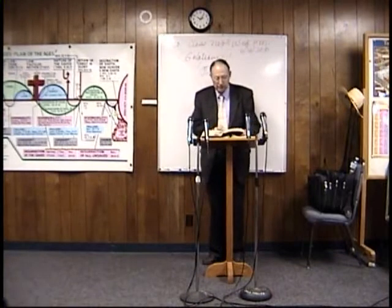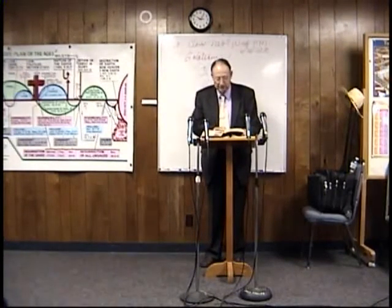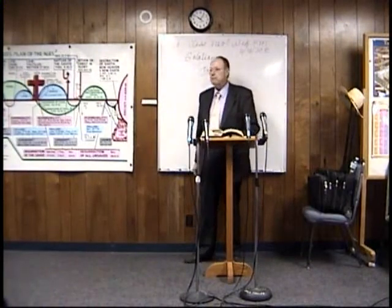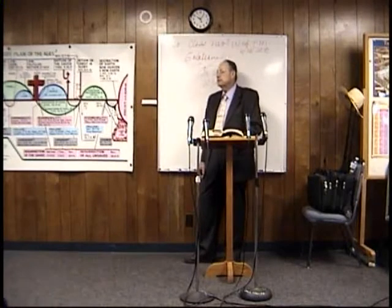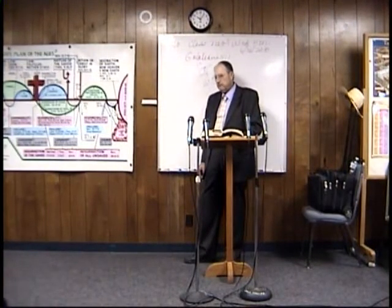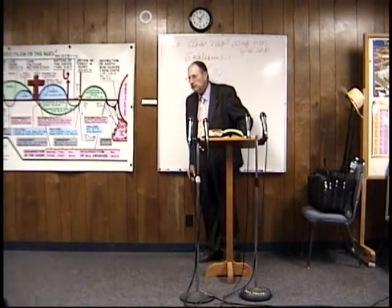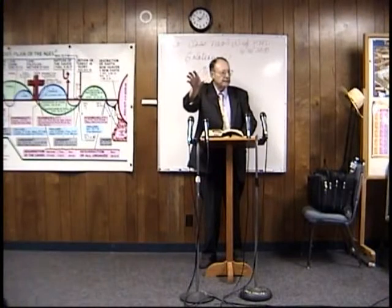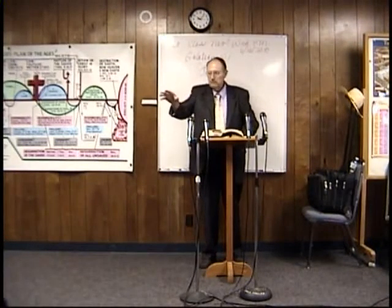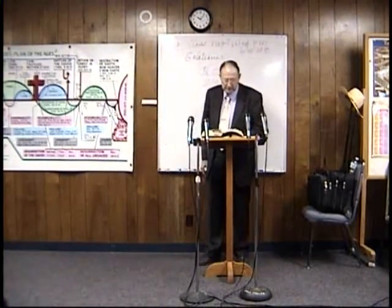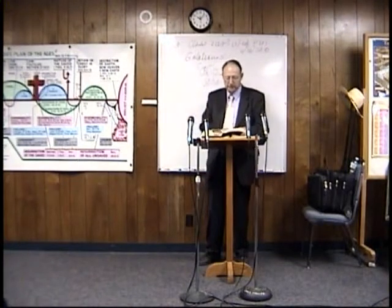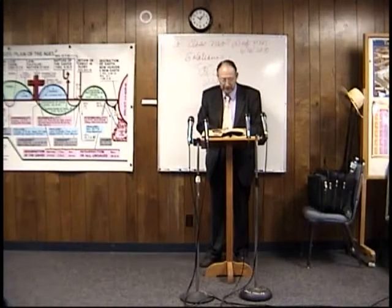Chapter 16, verse 1: When David had passed a little beyond the summit, behold, Ziba, the servant of Mephibosheth, met him. Remember Mephibosheth — that's Jonathan's son, Saul's grandson, the crippled boy. David had said, 'Is there a son left of Jonathan? I want to show kindness to him.' Ziba the servant of Mephibosheth met him with a couple of saddled donkeys, 200 loaves of bread, 100 clusters of raisins, raisin cakes, 100 summer fruits, and a jug of wine. Man, that's like a buffet — a lot of food, but they're going to need it.